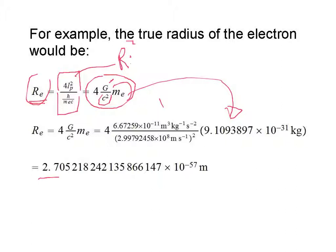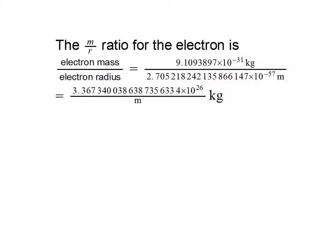Let's look at the mass to radius ratio of the electron. We take the mass of the electron here, times our value of the radius we just calculated, and we get 3.367 times 10 to the 26 kilograms per meter.